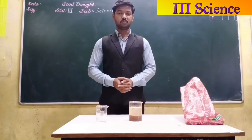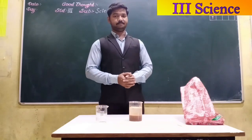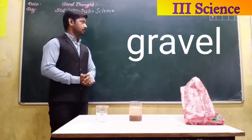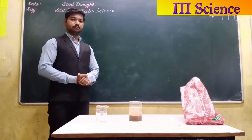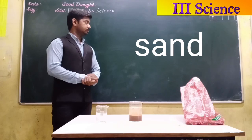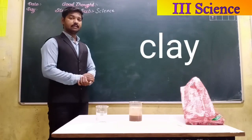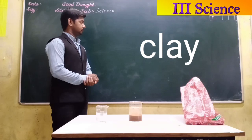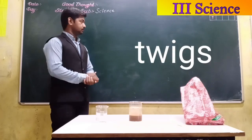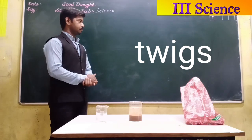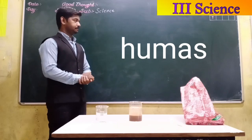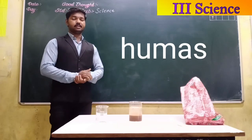Now I will give you the words — you have to write these in your notebook. Number one: gravel. Number two: sand. Number three: clay. Number four: twigs. Number five: humus. So write these words in your notebook.